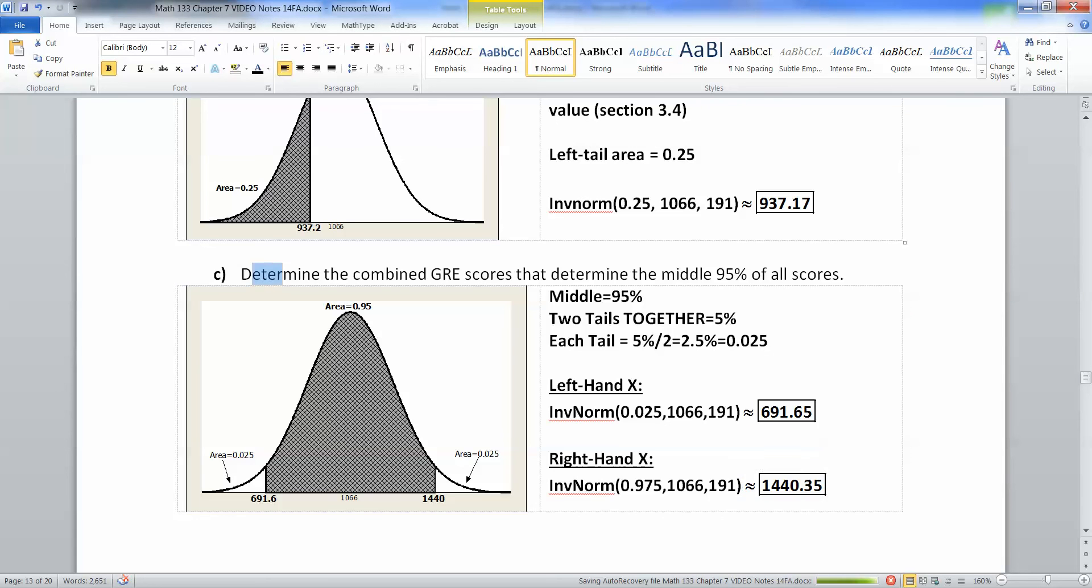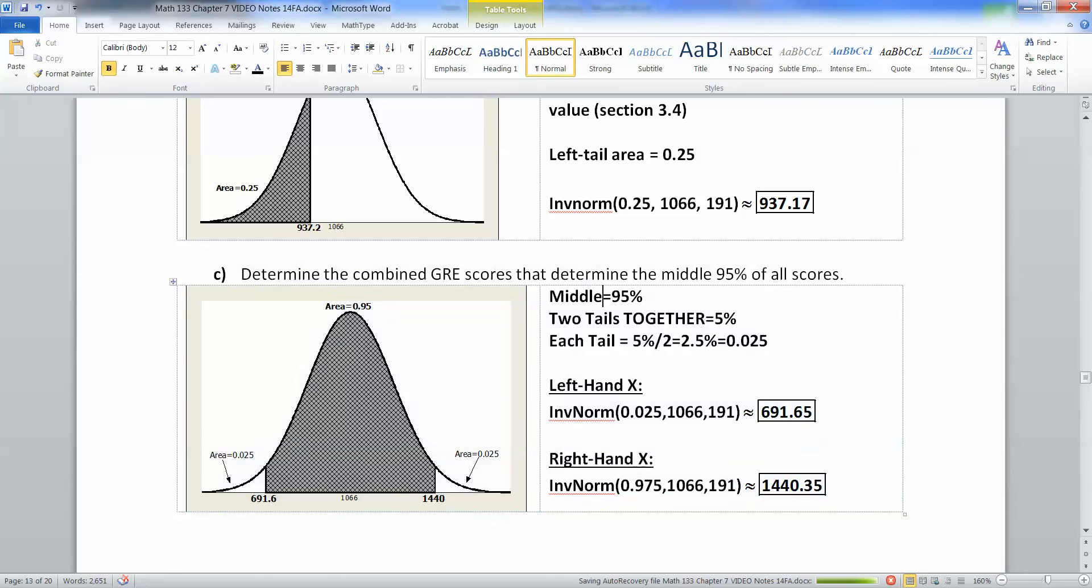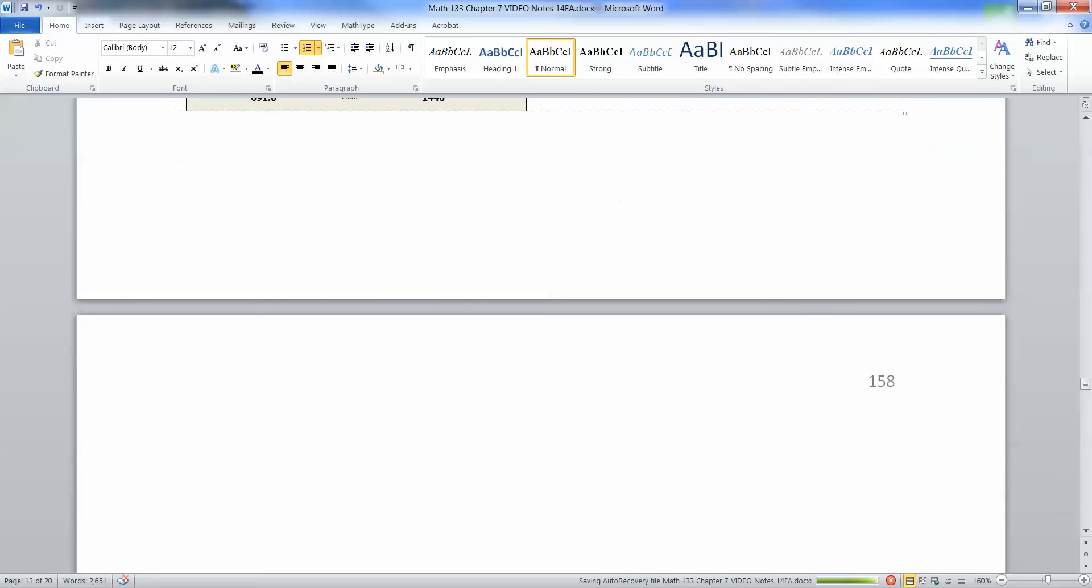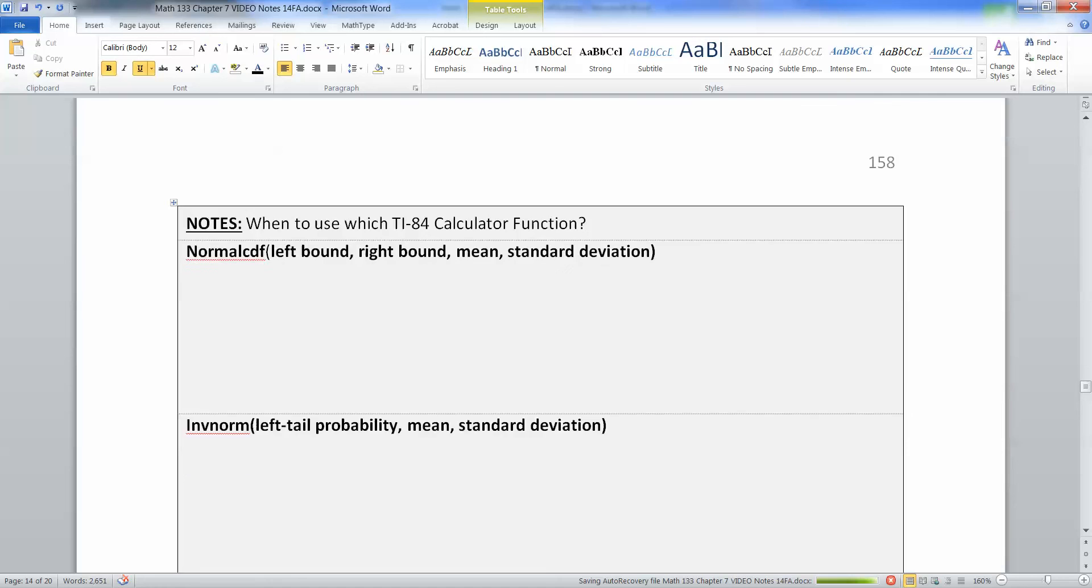And this concept we were working on right here is actually very important. That's going to come back to haunt you in a big way in chapter nine, where you have to find the middle, the scores that cut off the middle 95% or the middle 90%. So keep that one in mind because it'll come in handy later. All right. So now we've learned two different techniques. We've learned normal CDF and we've learned inverse norm and they get used in different situations. So let me write down a couple of things.